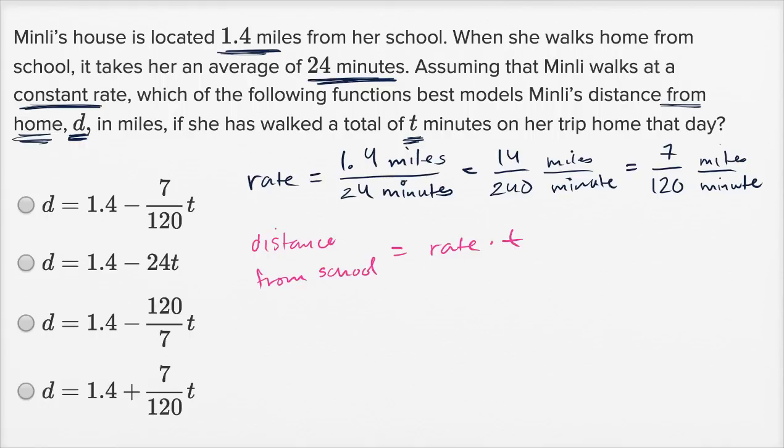But her distance from home is going to be 1.4 miles minus the distance from school. So let me just write D, because this is what we care about. D, which is her distance in miles from home, that's going to be 1.4 minus distance from school.